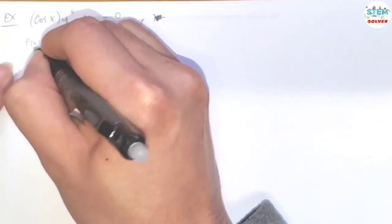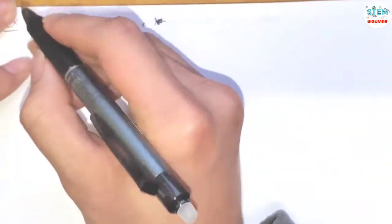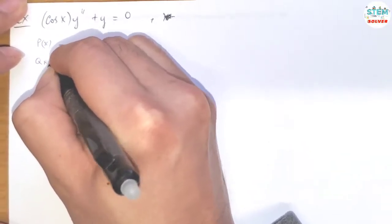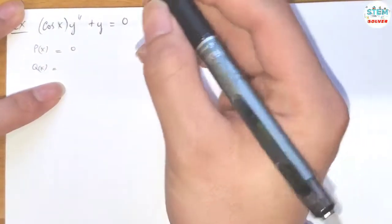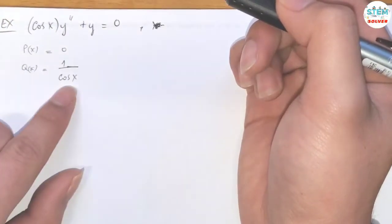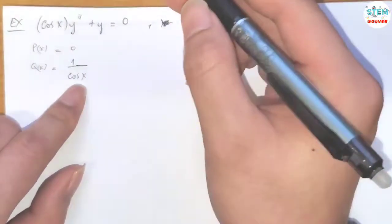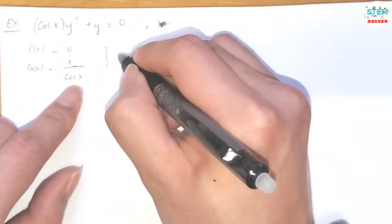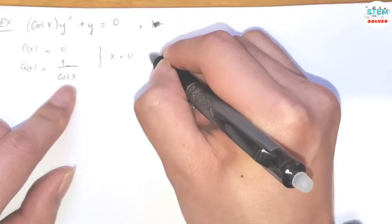First of all, let's check p(x) and q(x) to see if x equals zero is analytic or not. So p(x) is equal to zero and q(x) is equal to one over cos(x). When x equals zero, cosine of zero is one, so x equals zero is an ordinary point.